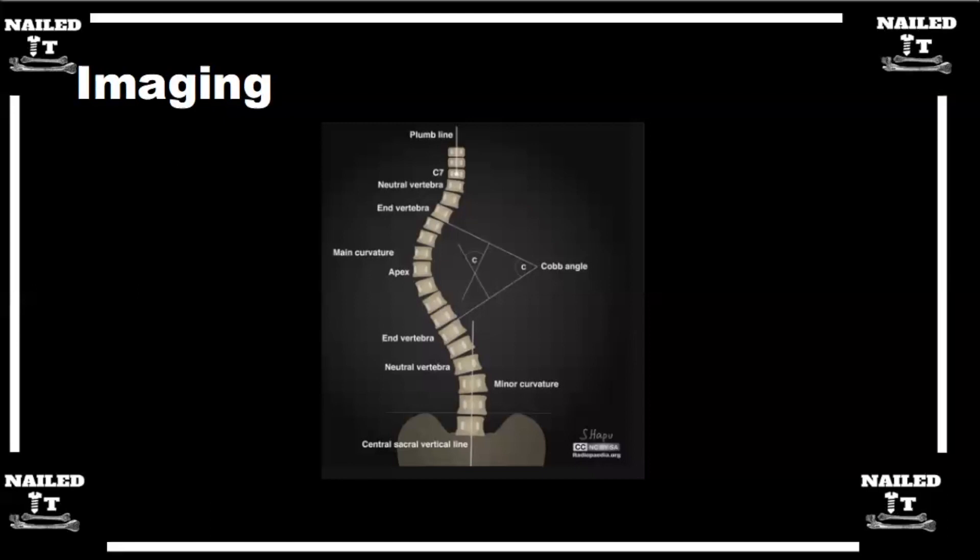Our end vertebra are the ones where we got our Cobb angles from. Our neutral vertebra is going to be the vertebra where the pedicles are even on both sides. And then our stable vertebra is going to be the most cephalad vertebra that gets bisected by the center sacral vertical line. That's right, so the one that's cut in half.